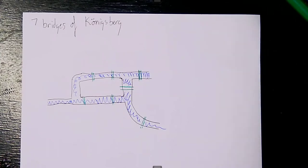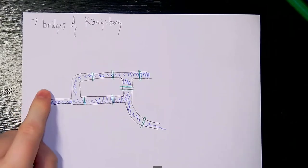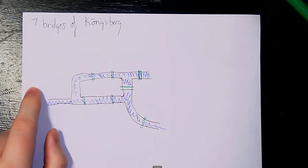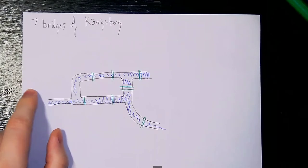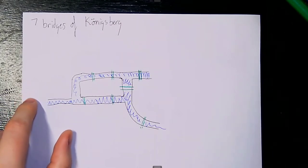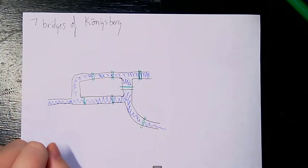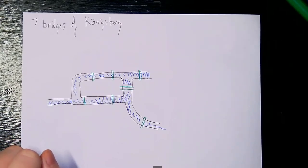The background for this problem is super cool. What I love about this is that it's the first graph theory problem and it's applied to an actual real life thing that was worrying people at the time. Not a very important real life thing, but a very real life thing nonetheless.